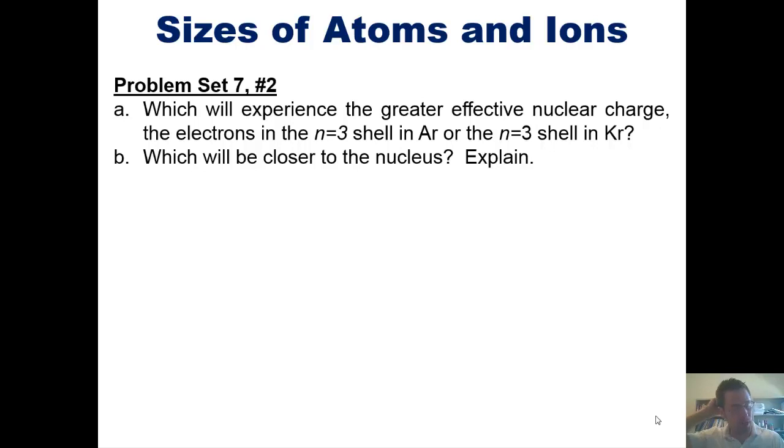That takes us to a set of lecture problems from the problem sets that I give my students in class. You'll remember from an earlier video that I asked and explained which will experience a greater Z effective or effective nuclear charge, the electrons in the n=3 shell in argon or in the n=3 shell in krypton. That leads us to this second question, which of those electrons will be closer to the nucleus? Explain.